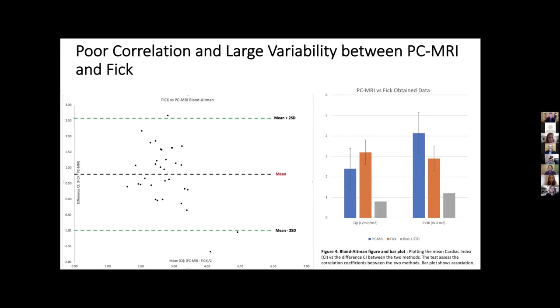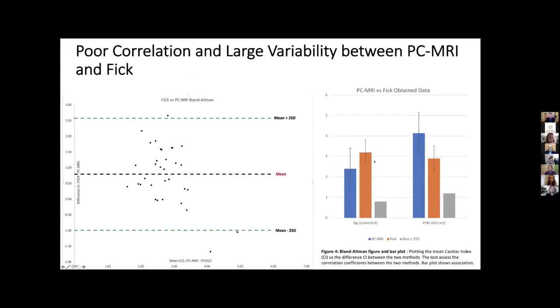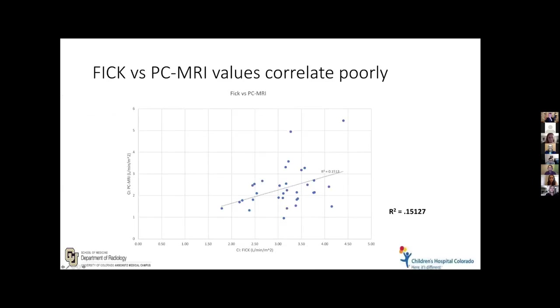Here's a simple bar graph showing the large differences in flow here, and then the pulmonary vascular resistance here. They should line up perfectly with each other. This is another way of stating it. There's poor correlation along this line, R squared of 0.15. There's poor correlation.